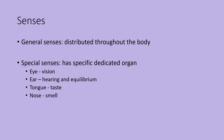We usually divide the senses into general senses versus special senses. General senses, like touch, are distributed throughout the body. The five special senses each have a specific dedicated organ where those receptors are found. The five special senses are vision, hearing, equilibrium, taste, and smell — involving the eye, the ear, the tongue, and the nose.